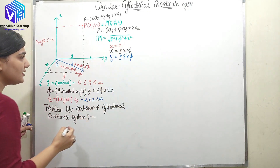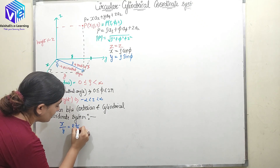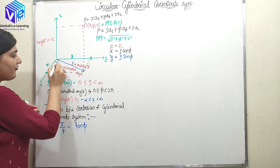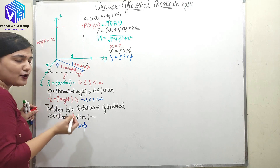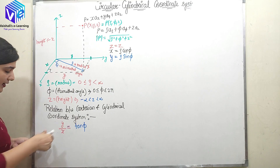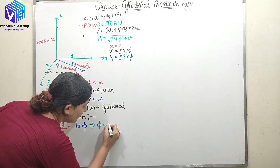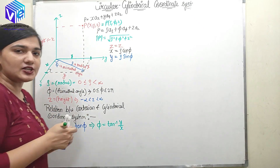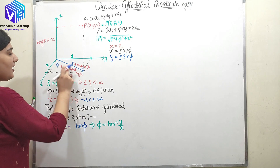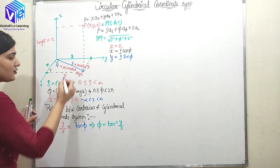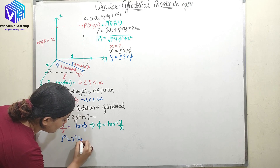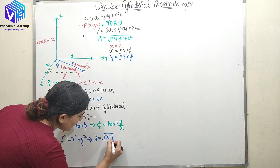If I divide those two equations, I get y/x = tan(φ), so φ = tan⁻¹(y/x). You can verify this from the triangle: φ is the angle, y is the height, x is the base, so tan(φ) = y/x. Also, from the right-angle triangle using Pythagoras' theorem, rho² = x² + y², so rho = √(x² + y²).